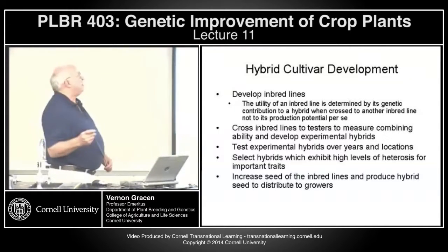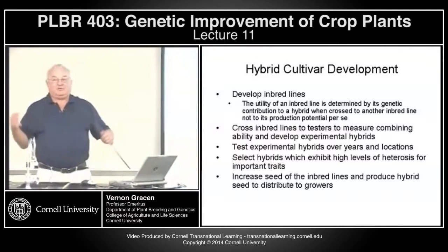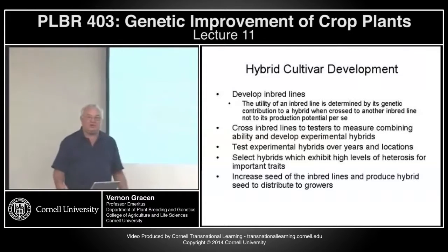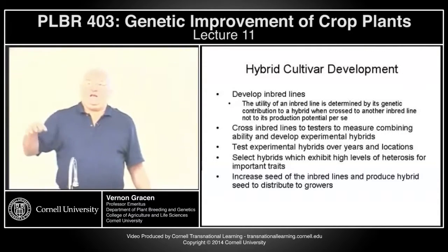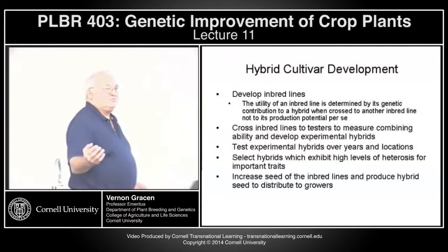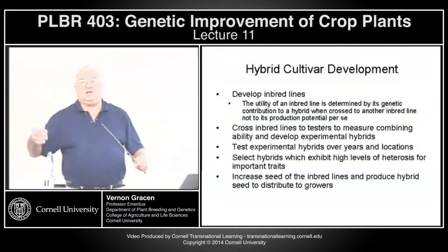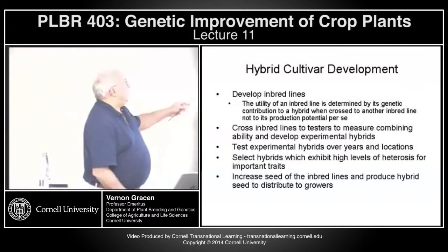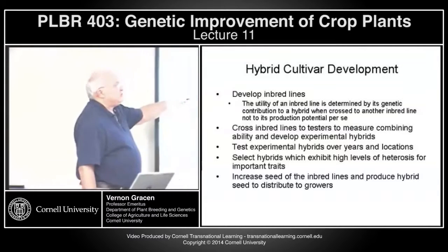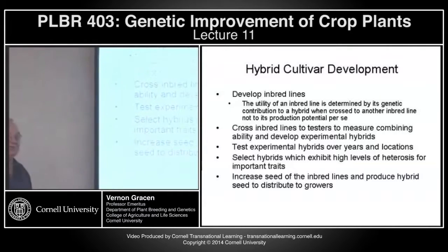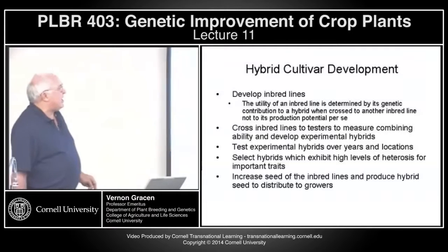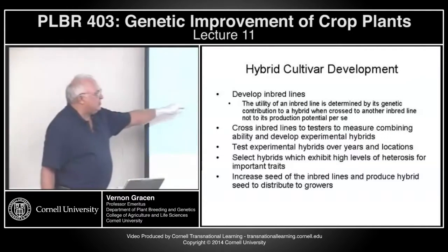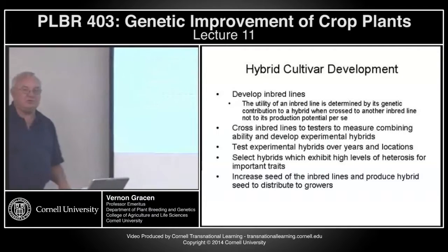So how do you develop hybrid cultivars? You first have to develop inbred lines. The use of an inbred line is determined by its potential to produce a hybrid when crossed to another inbred — inbred yield per se is nice, but some blockbuster hybrids have been produced on pretty poor male inbreds. You cross those inbred lines onto testers to measure combining ability, test the hybrids over years and locations, select hybrids which exhibit high levels of heterosis for important traits, then maintain and increase seed of the inbred line and produce hybrid seed to distribute to growers every year.